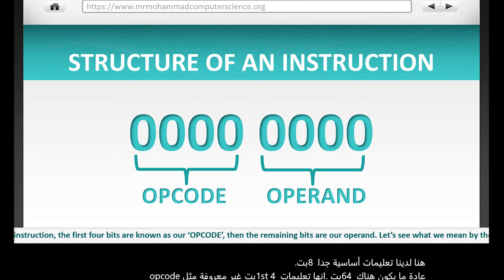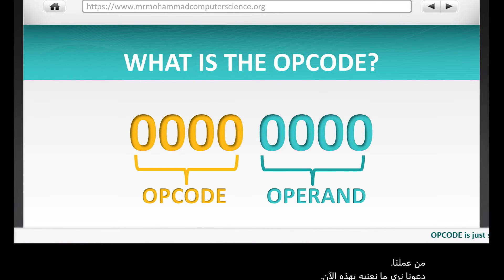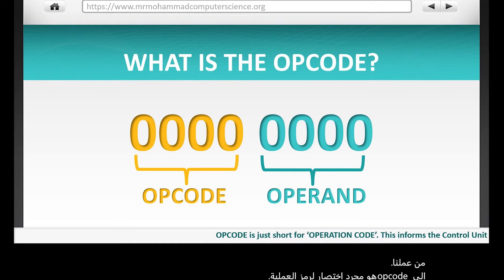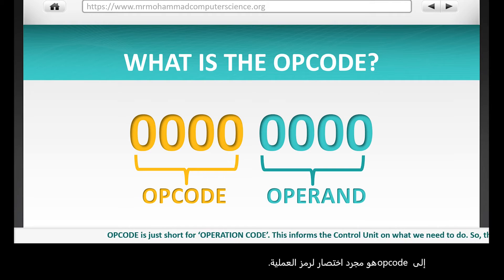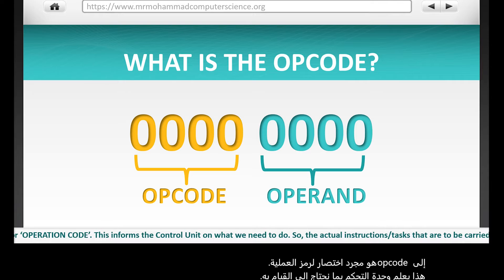Opcode is just short for operation code. This informs the control unit on what we need to do — the actual instruction or tasks that are to be carried out.